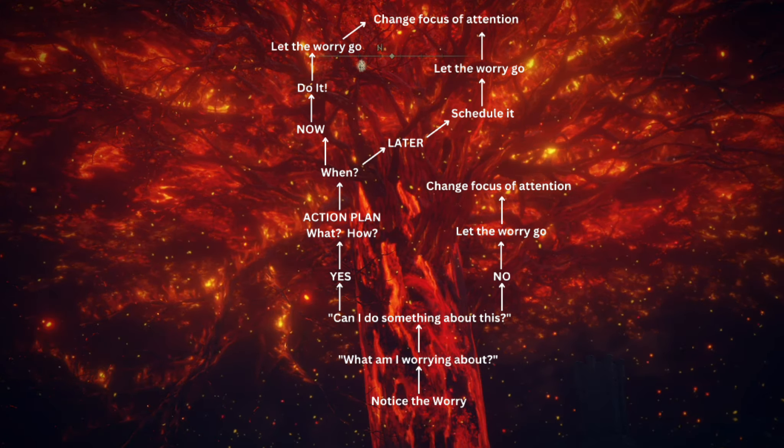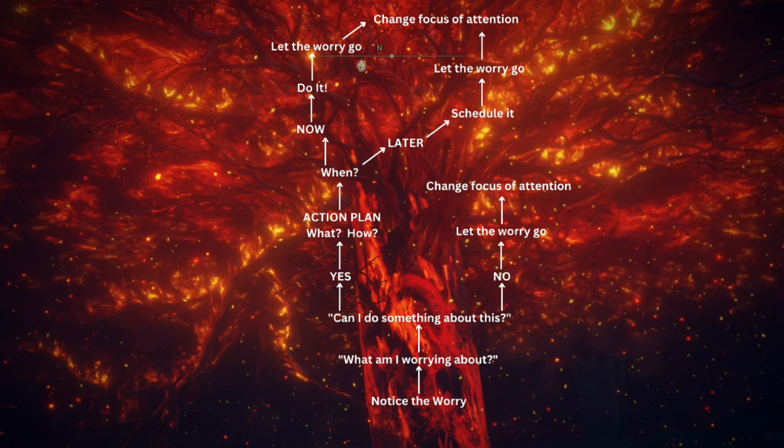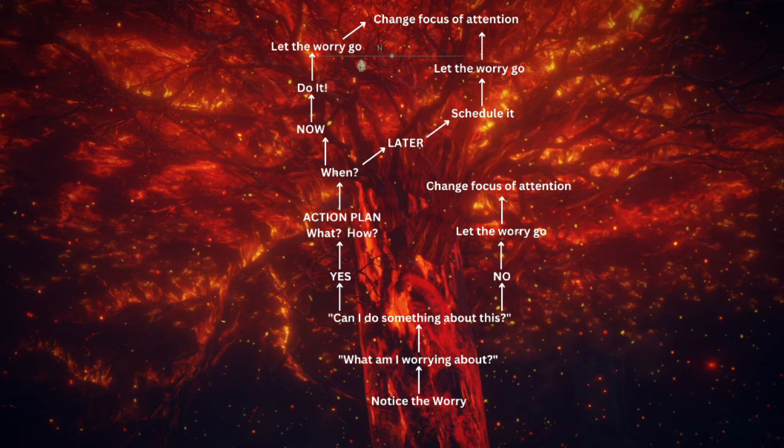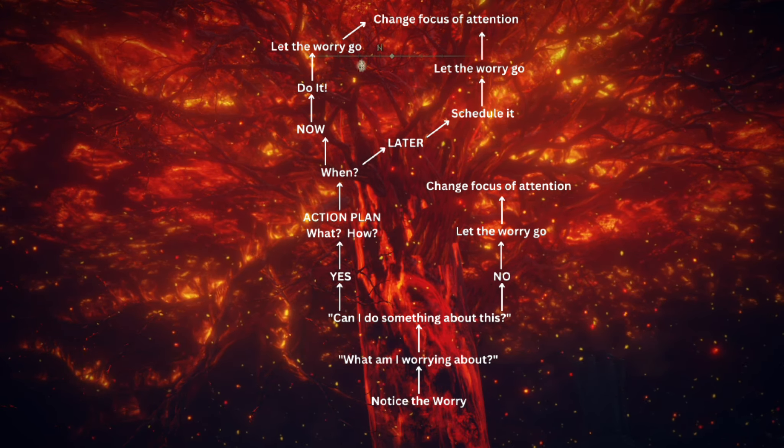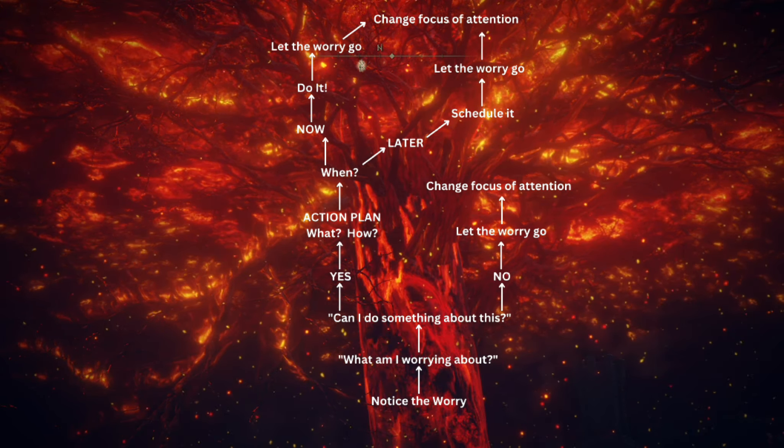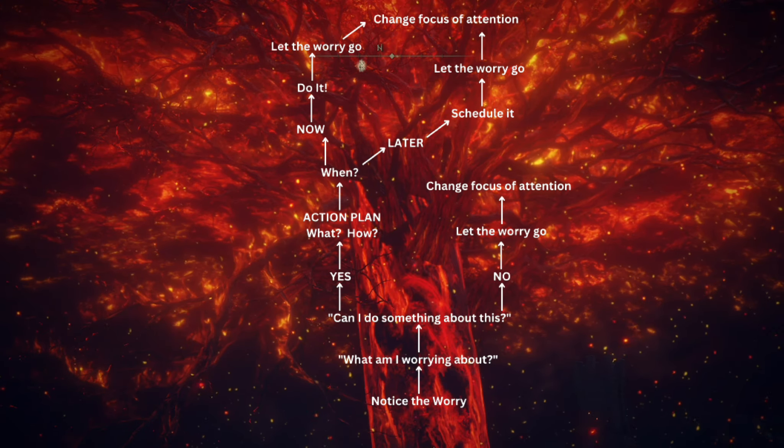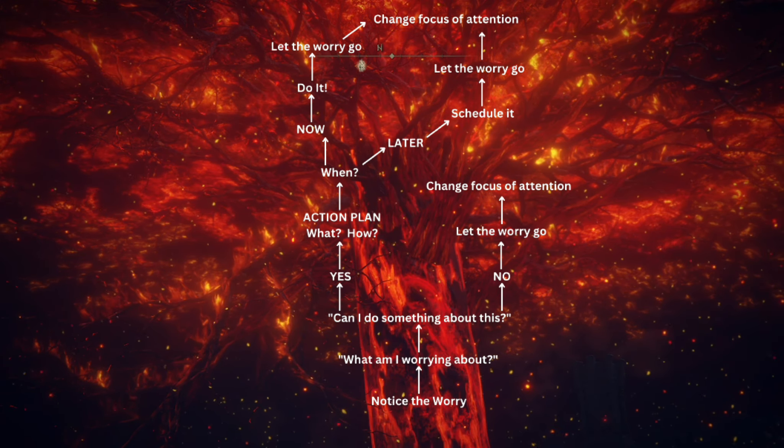Hopefully this explains the idea of the Worry tree. It's basically a decision-making tree, but the idea is to help you figure out when you can drop those worries, and when you can do something about it and put that plan in place. When you can't do something about it, just acknowledging that it's there, it's been a worry that you've had, drop the worry, move on to the next thing, change focus of attention.